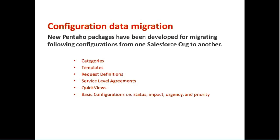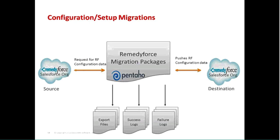As we get towards the end, they've now created Pentaho packages for migrating configurations from one Salesforce org to another. We'll now have the ability to migrate categories, templates, service request definitions, service level agreements, quick views — which are obviously very important for the new dashboards — and basic configuration data such as status, impact, urgency, and priority. These Pentaho packages come with the release. It has error logs and auditing throughout, and being able to push configuration data to another org is something people have been wanting for a long time.